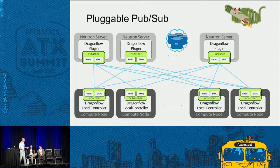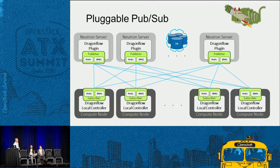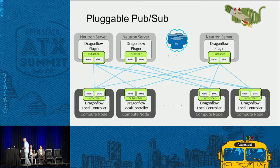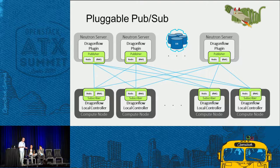Another nice thing is the pluggable pub-sub. If you look at this common OpenStack cloud environment, you have many Neutron API servers usually in active-active mode, and they're all talking with all the local controllers. Each one can receive an API change and needs to transfer this change to the controller. This is very important to keep all of this consistent and send this information in a reliable way. We abstract this from the database because the database requires some characteristics, but sometimes publish-subscribe requires others — we wanted to optimize them separately.